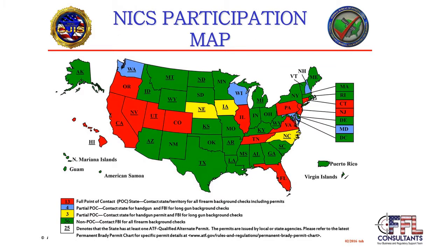Throughout our presentation we will be referring to the NICS process. NICS stands for National Instant Criminal Background Check System. If your state is listed in green, your NICS background checks are conducted through the FBI. If you're in a red, blue, or yellow state, your background checks may go through your state police agency and/or the FBI. Check with your store manager to find out where and how your background checks are completed.